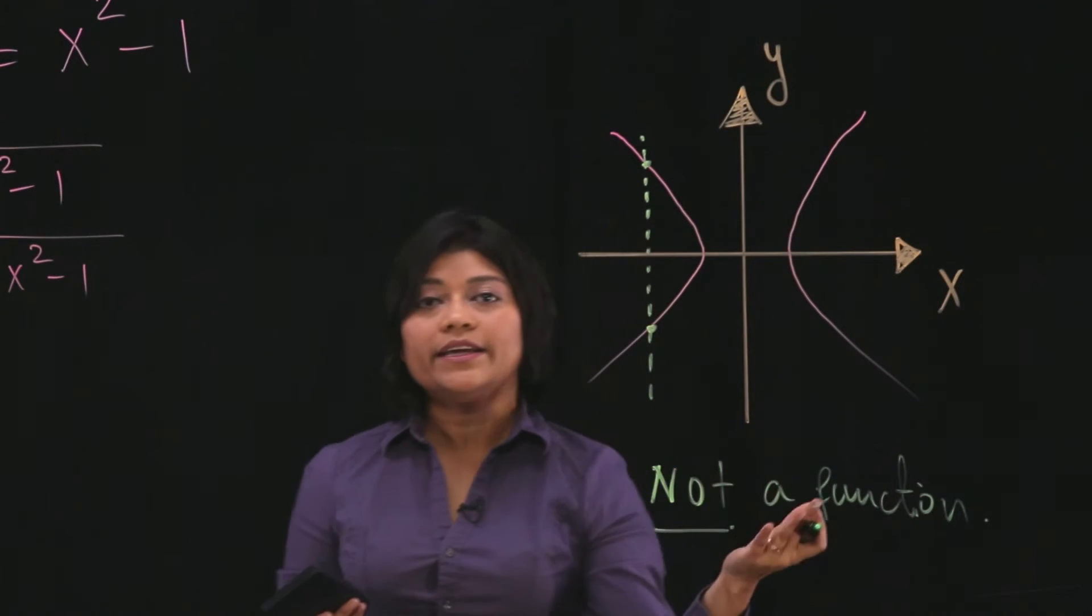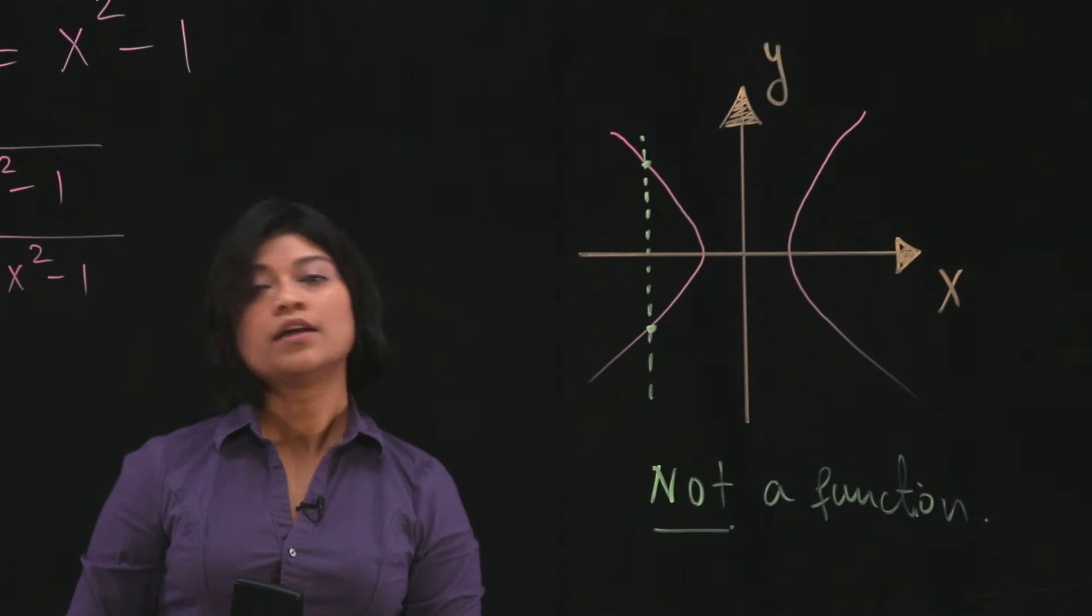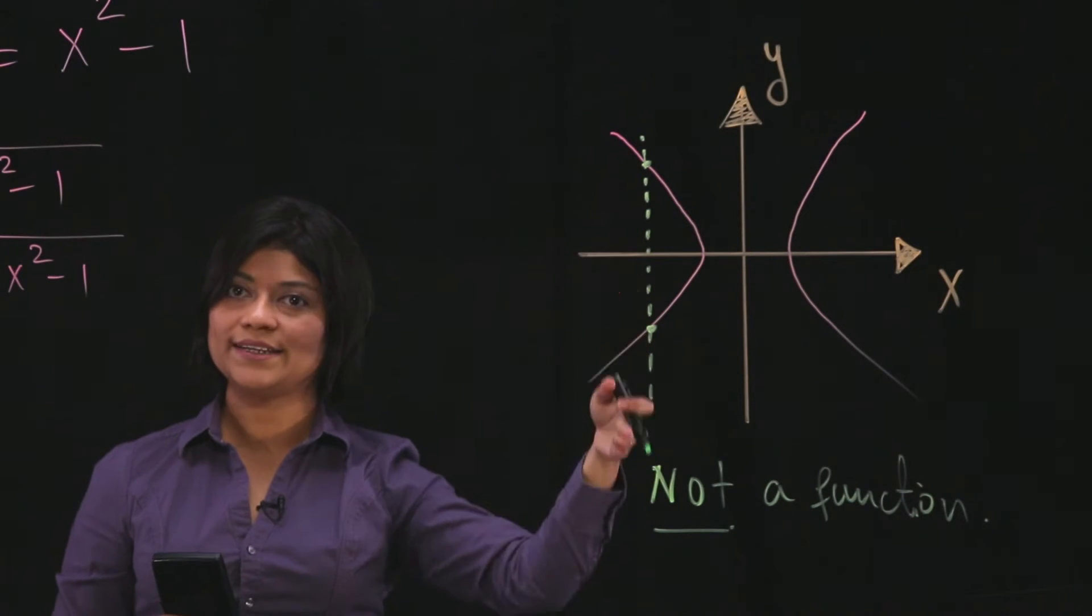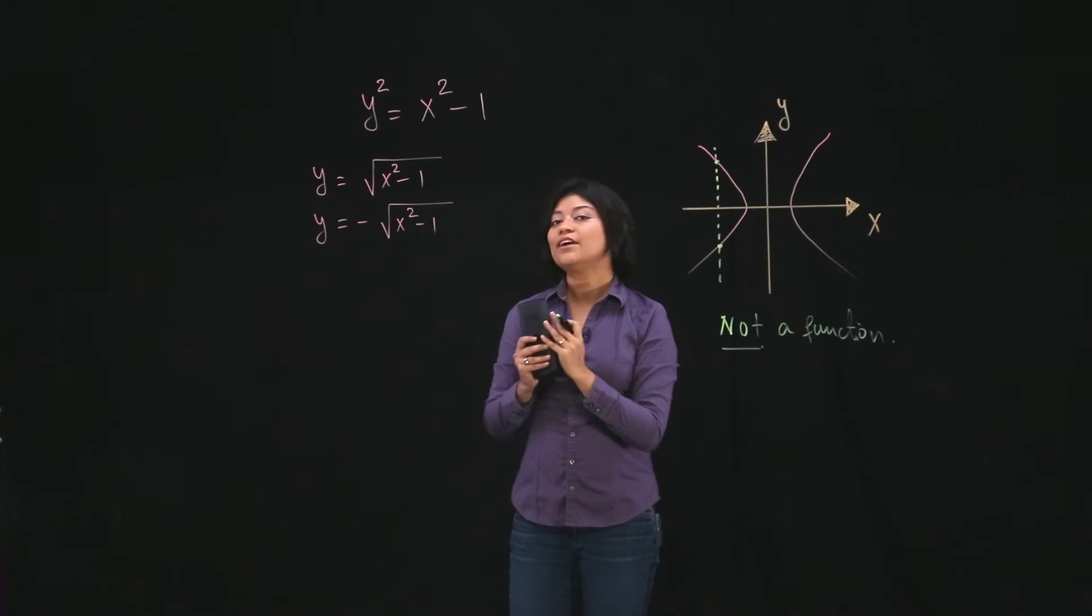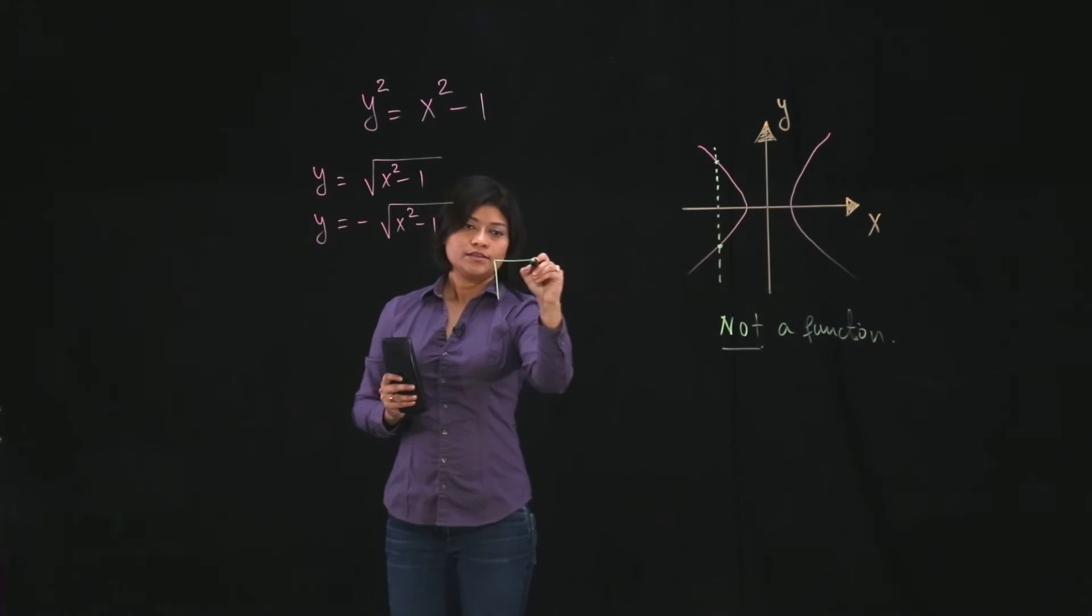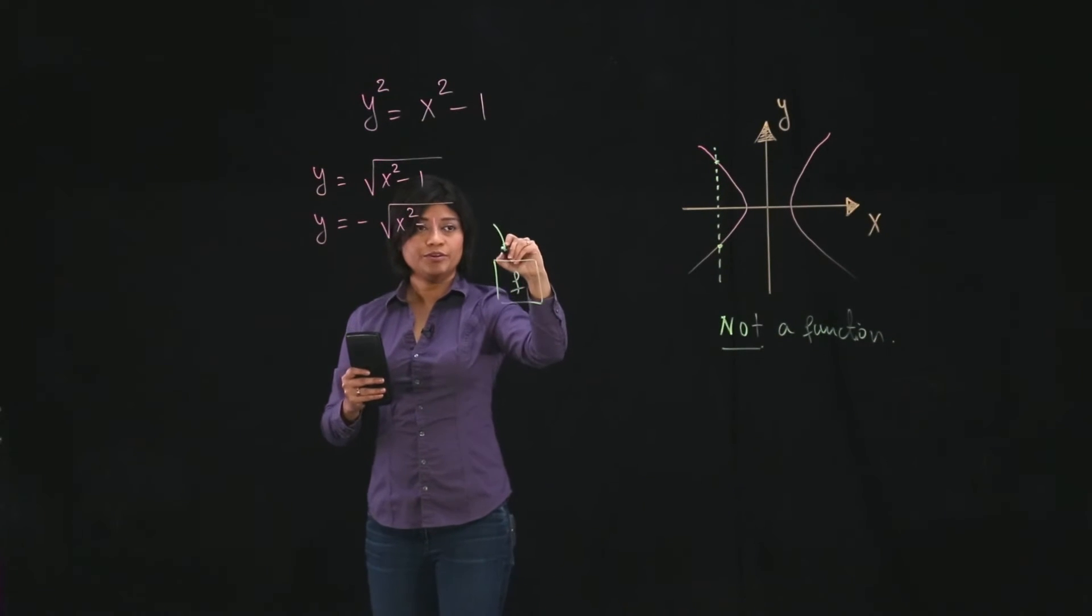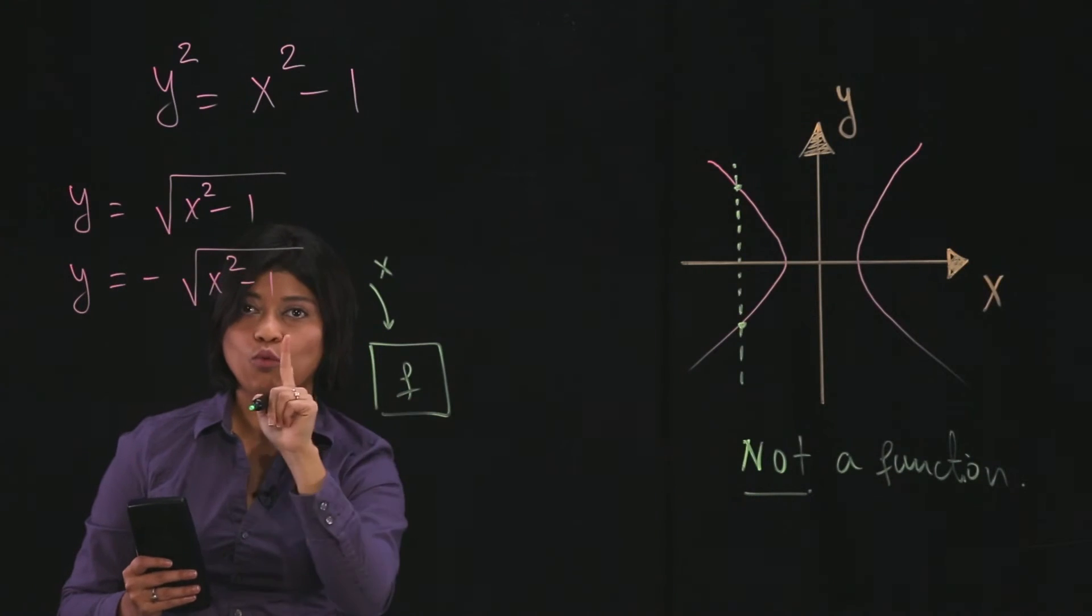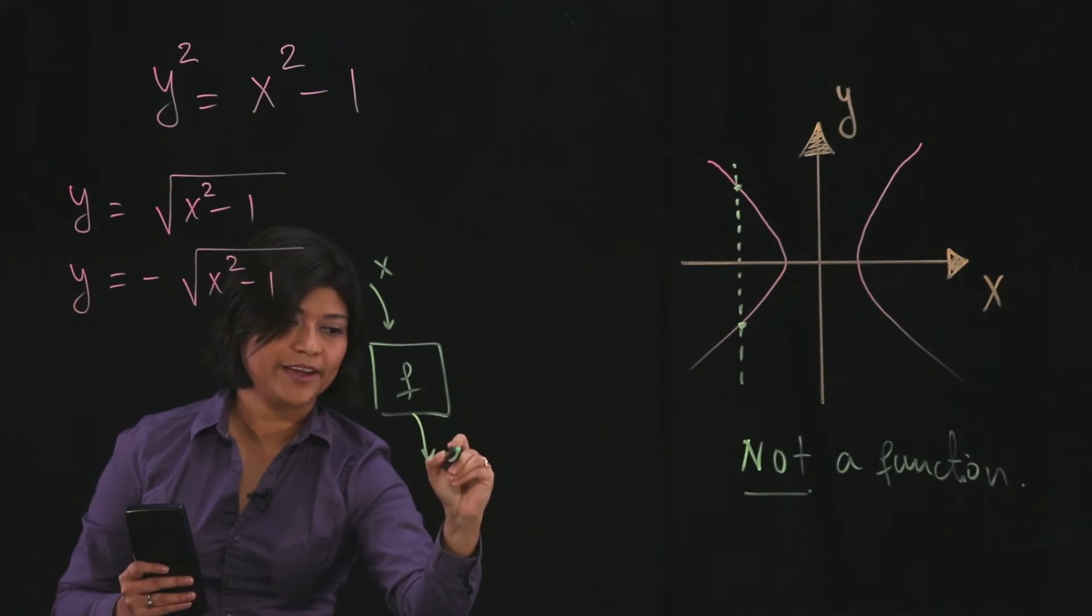So definitely, you can use the graph to figure out whether this expression is a function or not. Now, what is the other method? What is this vertical line test, really? So recall what the definition of a function is. The definition is a function is something so that when you input one x, you get one output. Only one, right? You get f of x as output.